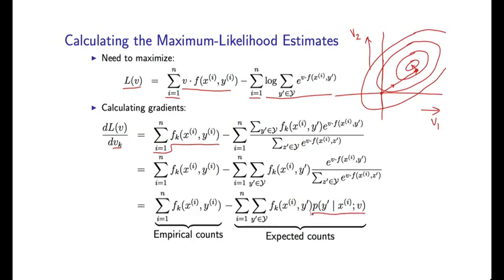all I have here is, in fact, the conditional probability of Y primed under our current model. So these terms are often referred to as empirical counts, because if these FKs are indicator functions 0, 1, this is basically the number of times this particular question for the K feature has been true on our training sample. And these are often referred to as expected counts, because they're kind of the expected number of times the feature has fired under our current model.